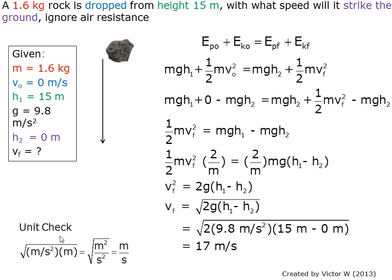Performing a unit check, we have square root of meters per second squared times meters, which is square root of meters squared over seconds squared, which is simply meters per second.